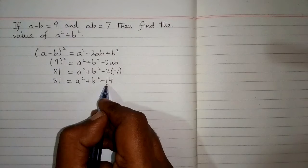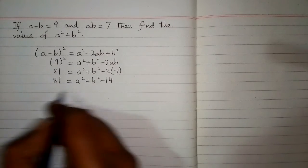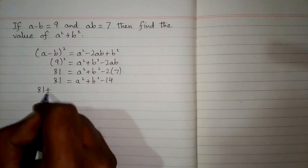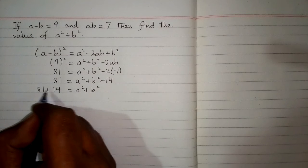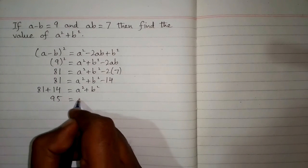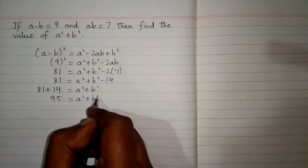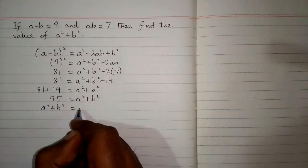We can take this minus 14 to the other side of the equation, so it becomes plus 14. 81 plus 14 equals 95, so the value of A square plus B square is equal to 95.